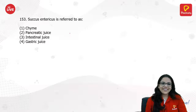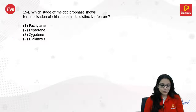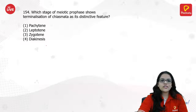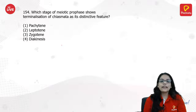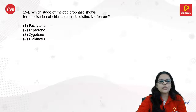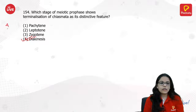Succus entericus is a kind of intestinal juice — a very direct question. Which stage of meiotic prophase shows terminalization of chiasmata? Whenever we talk about terminalization of chiasmata, it will always be diakinesis.